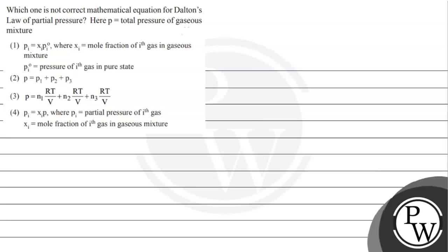Hello, children. Let's read this question: Which one is not the correct mathematical equation for Dalton's law of partial pressure? Here, P is equal to the total pressure of the gaseous mixture, and the following options are given to us. We have equations given, and we need to identify which equation is not correct according to Dalton's law of partial pressure.